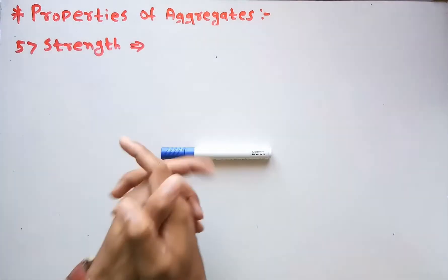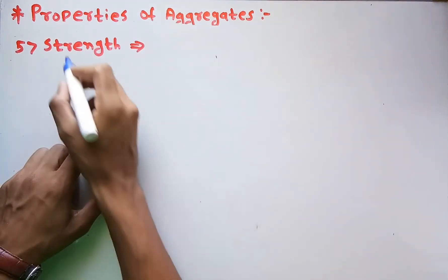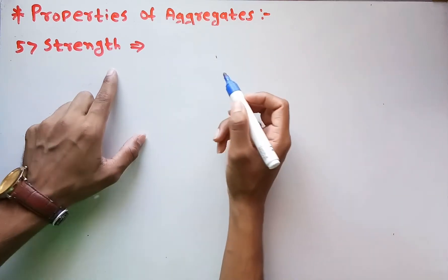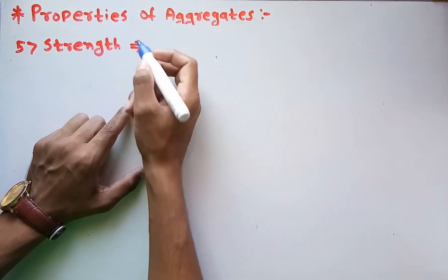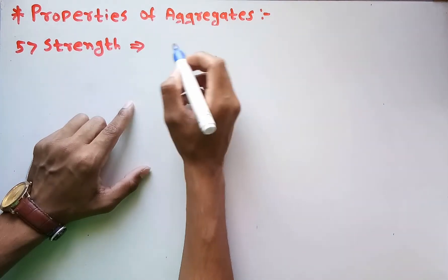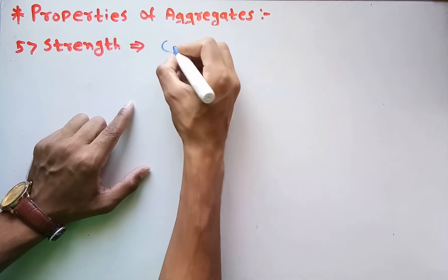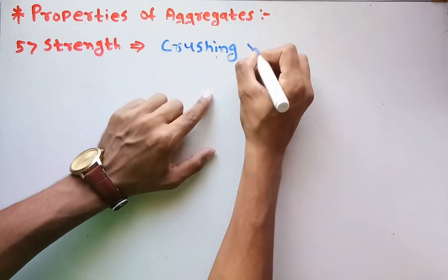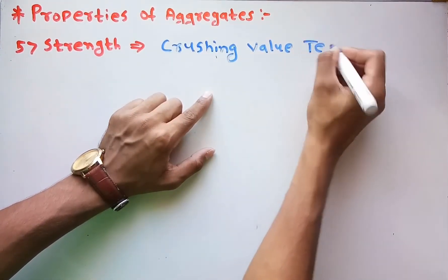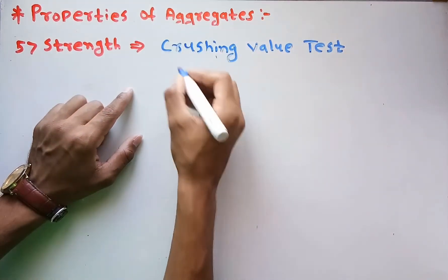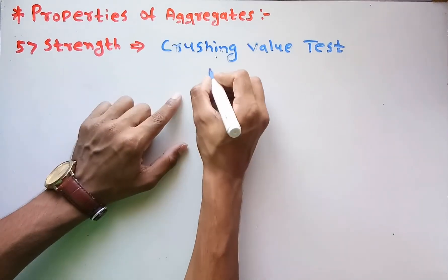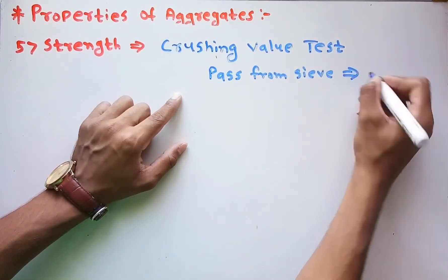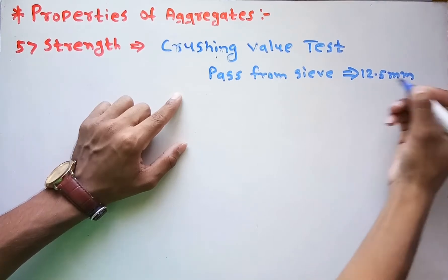The fifth property is strength. The strength of aggregate directly imparts the strength of concrete, so it is important to check the strength factor of the aggregate. Strength is determined by the crushing value test. In this test, aggregates are passed through a sieve of size 12.5 mm and retained on a sieve of 10 mm.